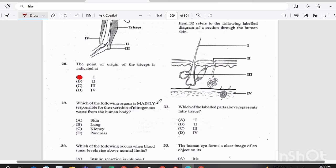Question 29. Which of the following organs is mainly responsible for the excretion of nitrogenous waste from the human body? Is it A, the skin, B, the lung, C, the kidney, or D, the pancreas? The answer there is C, the kidney.